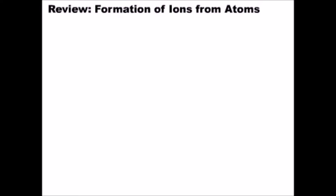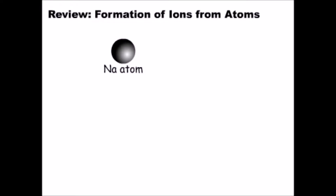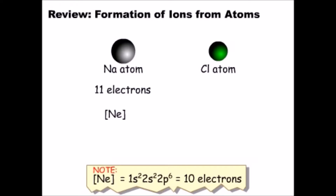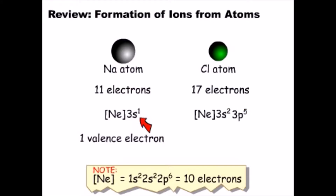Let's answer that question so we can better understand what holds these ions together in the compound. We'll need to review the electron configurations of the sodium and chlorine atoms. Sodium has 11 electrons, one more than neon, so we can write its electron configuration as neon 3s1 using the nearest noble gas notation. Chlorine has 17 electrons, or seven more than neon — two fill the 3s orbital and the remaining five partially fill the 3p orbital. This means sodium has one valence electron and chlorine has seven valence electrons.